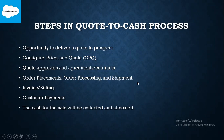Once shipment is done, invoice or billing will be generated and given to the customer, and then customer payment will happen. Once the customer receives the billing, they will pay as per the bill they get. At the end, the cash for the sale will be allocated — accounting will happen at the organization level.